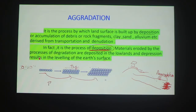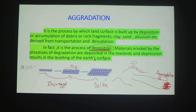Examples of aggradation landforms include delta, highland to lowland by deposit, and flood plain.